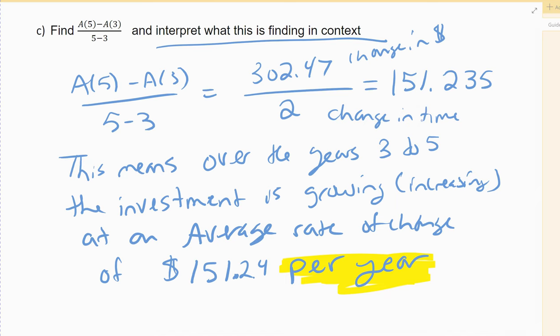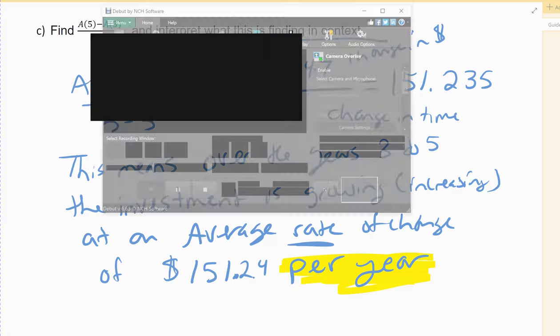If you leave off the per year, it's no longer a rate, and we want to make sure it's a rate of change. So that's an average rate of change. We'll stop there — we're going to practice manipulating the difference quotient in the next set of videos. See you next time.